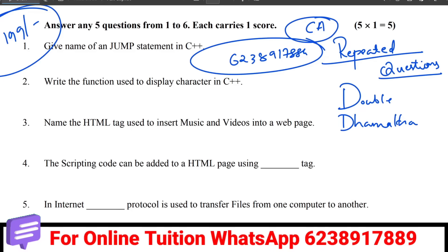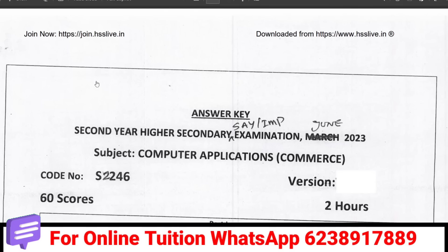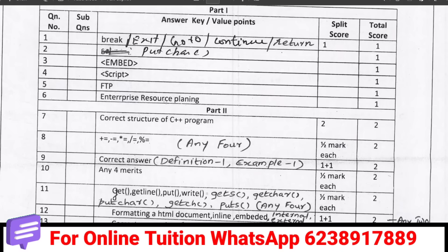Give the name of a jump statement in C++. The jump statements in C++ are: break, goto, continue, and return.